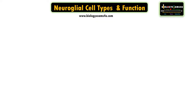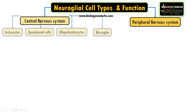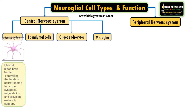Now let us see neuroglial cell types and their functions. Based on location in the central nervous system, there are four types of neuroglial cells: astrocytes, ependymal cells, oligodendrocytes, and microglia.